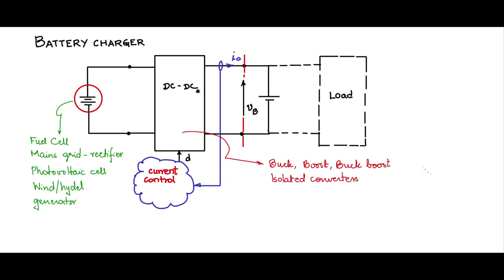If you are using a boost converter, the inductor current, which is the input current, will be controlled. In the case of the buck-boost, the inductor current is controlled. Generally, for battery charging, the charging current being pumped into the battery needs to be profiled. If it is properly profiled, then the chemistry in the battery will work properly to extract as much life out of the battery as possible.